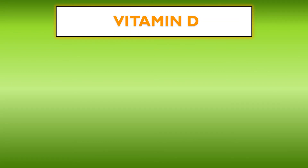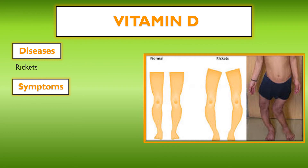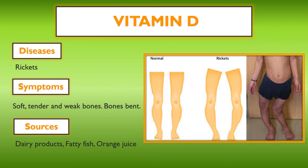The next deficiency disease is rickets, caused due to the deficiency of vitamin D. Symptoms include soft, tender, and weak bones, bones getting bent, and the person not being able to stand straight. Sources of vitamin D are dairy products, fatty fish, and orange juice. The person should take a proper amount of vitamin D in their diet.